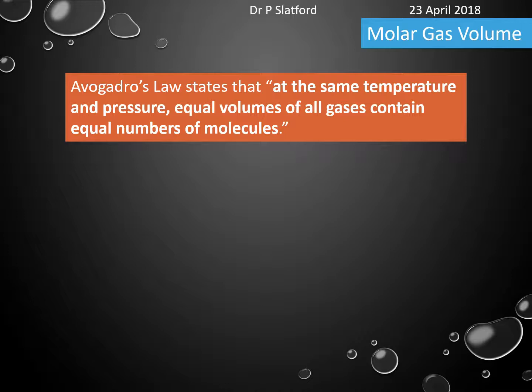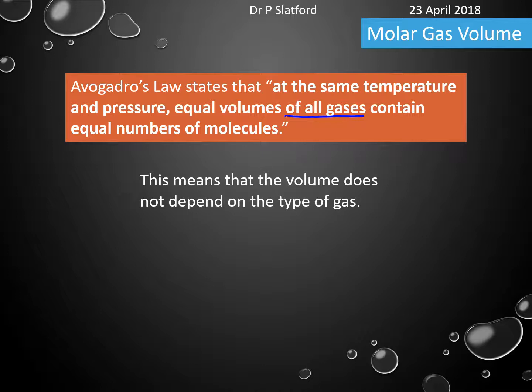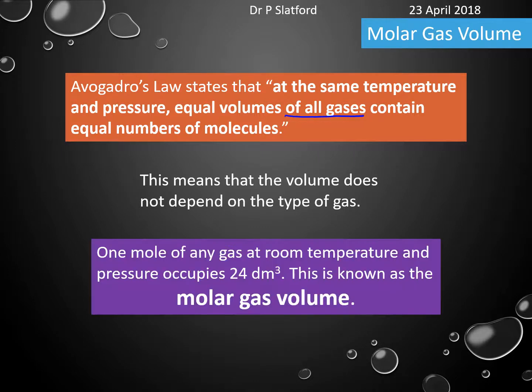In terms of the molar gas volume, we need to look at Avogadro's law, which states that at the same temperature and pressure, equal volumes of all gases contain equal numbers of molecules. What this actually means is that the volume of a gas, as long as we're using the same temperature and the same pressure, does not depend on the type of gas. More than that, one mole of any gas at room temperature and normal atmospheric pressure occupies 24 dm³. This is known as the molar gas volume.